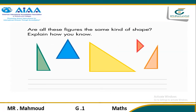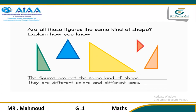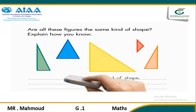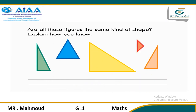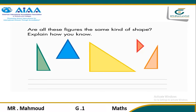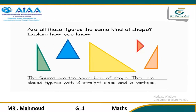This problem is key because it requires students to consider which attributes define a triangle and which do not. Listen and look for students who say the figures are not the same kind of shape because they are different colors and sizes. Remind these students that two-dimensional shapes can be defined by the number of straight sides and vertices. Have students count the number of straight sides and vertices each figure has, then ask them what these figures all have in common. Listen for students who say the figures are all the same kind of shape because they are all closed figures with three straight sides and three vertices.